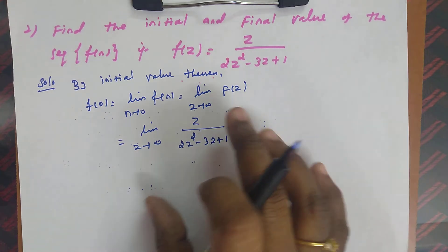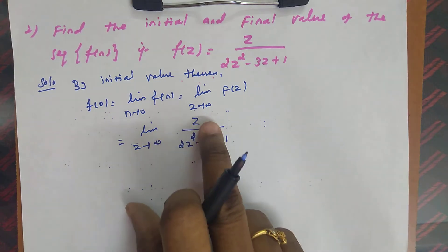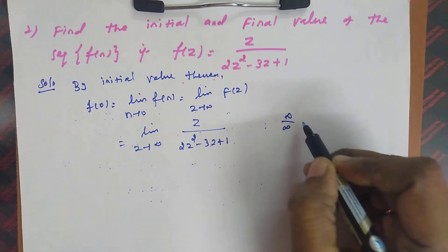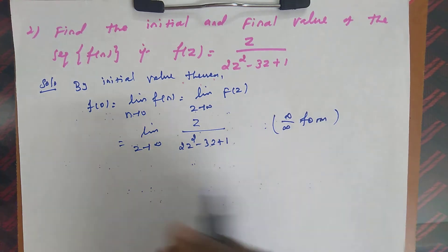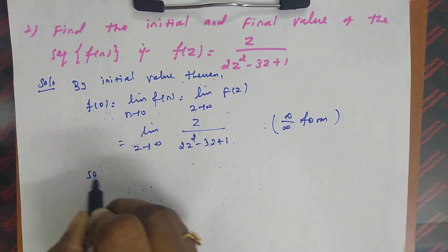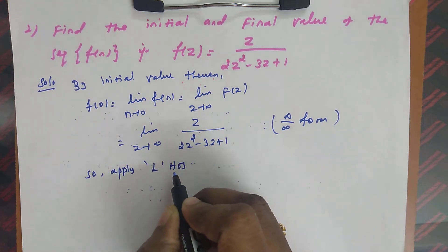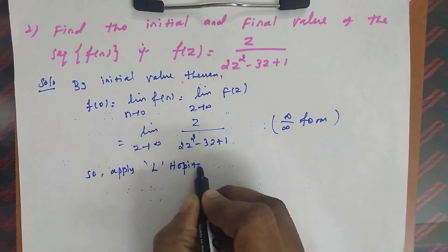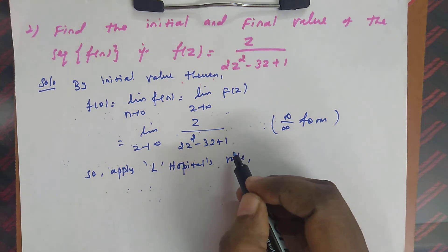Looking at the numerator and denominator of this F(z), both contain z. When we apply z tends to infinity, this gives an infinity/infinity indeterminate form. So we must apply L'Hôpital's rule, which means differentiating the numerator and denominator separately.